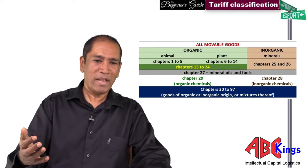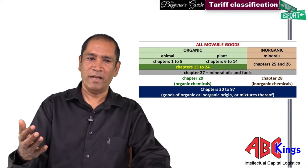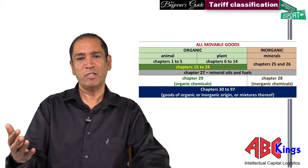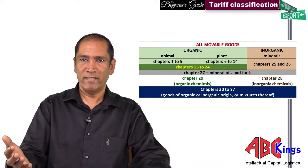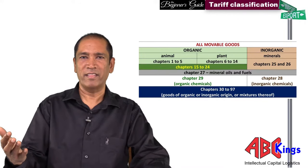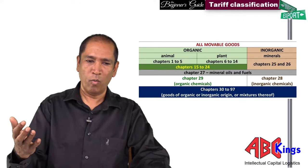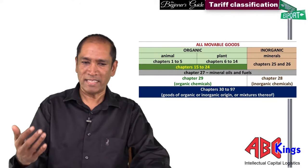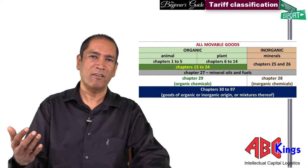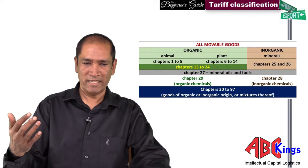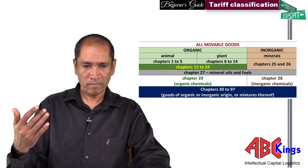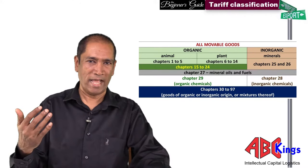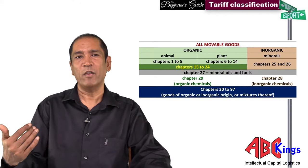Chapter 46 is articles of plaiting material. Chapter 47 is pulp. Chapter 48 is paper. Chapter 49 is printed matter. From chapter 50 onwards you go into textiles: chapter 50 is silk, chapter 52 cotton, chapter 53 vegetable textile fibers, chapter 54 man-made filaments, chapter 55 man-made staple, chapter 56 felt and non-woven, chapter 57 carpets, chapter 58 special woven fabrics, chapter 59 coated fabrics, chapter 60 knitted fabrics, chapter 61 knitted garments, chapter 62 other garments, chapter 63 textile articles, chapter 64 footwear, chapter 65 headgear.